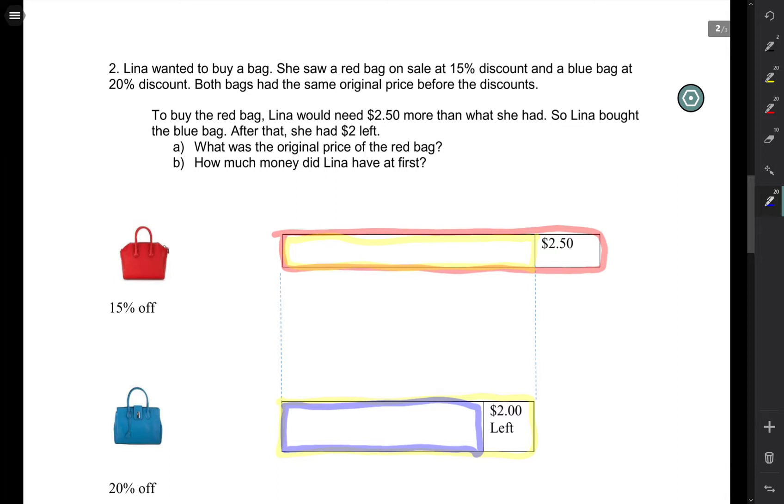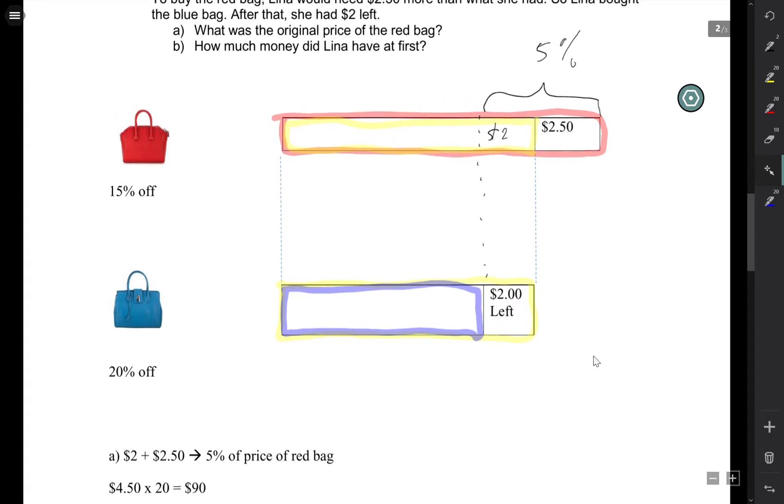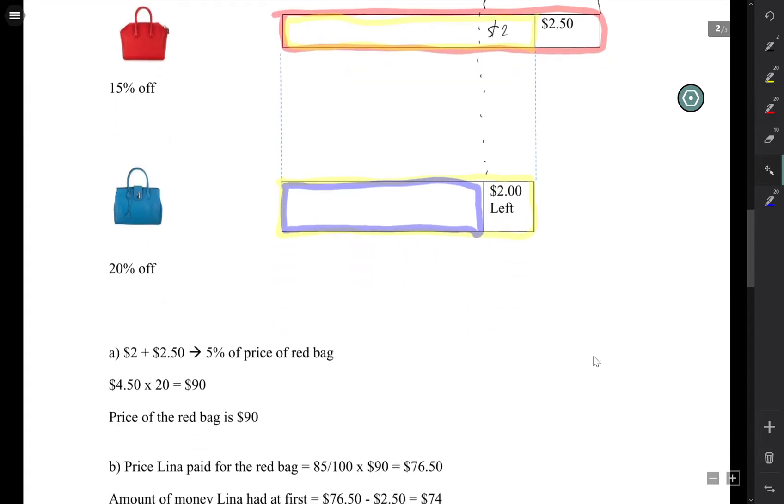If you compare the difference between the price of the two bags, you realize that this $2 here can fall into this little box. And then, that gives us this component, which is the 5% of the price of a bag. Hence, we have this line that tells us that 5% of the price of the bag is $4.50.